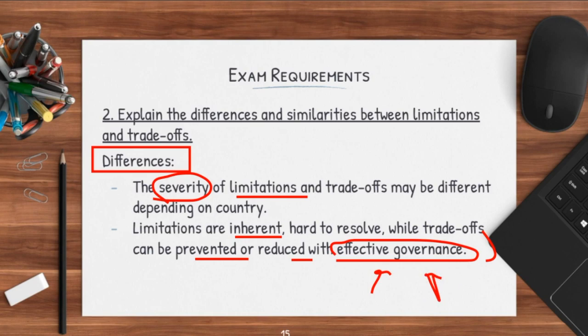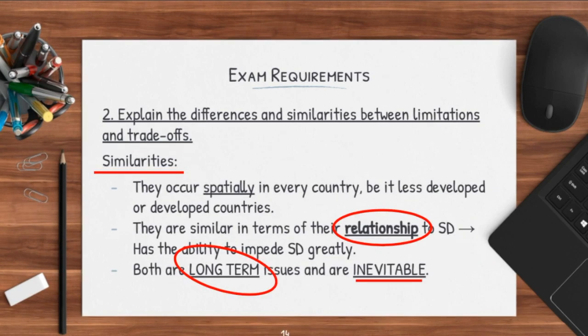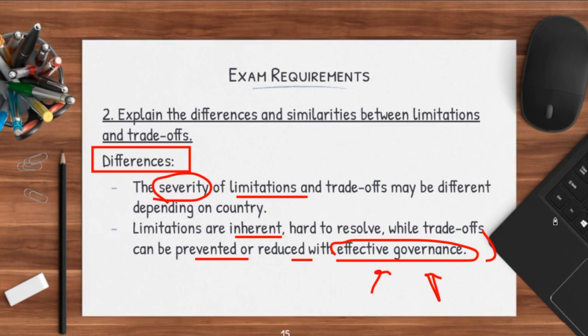So mates, limitations and trade-offs are actually very simple — this is all we need to understand. Just take note of these potential trade-off exam questions which can throw people off. Be very, very clear with the differences and use key terms such as 'spatially', 'temporally', and 'severity', as well as whether limitations and trade-offs are actually inevitable. That is all for this first part of your human geography series. We'll have a second part soon — if you have any questions, leave them in the comments below, drop a like if it was helpful, and subscribe if you want. I'll see you in the next one. Bye-bye.